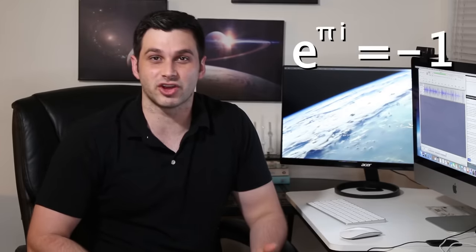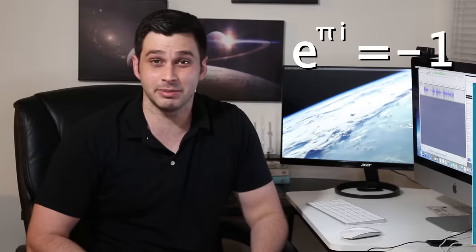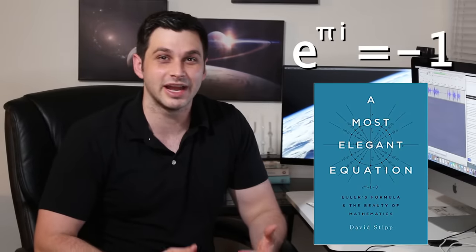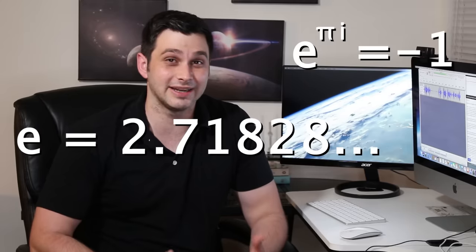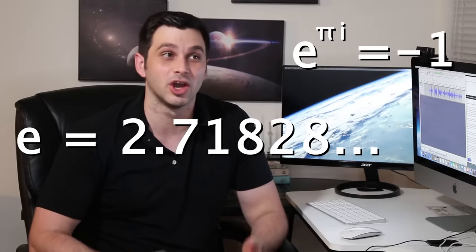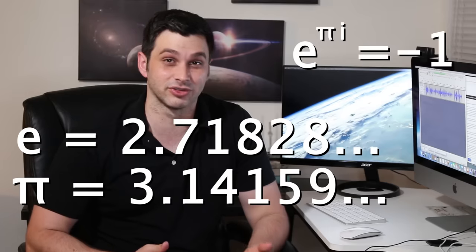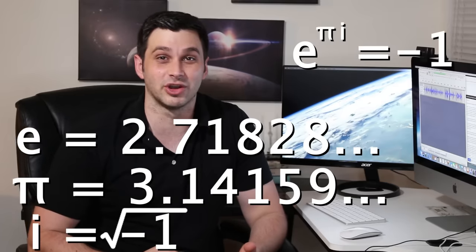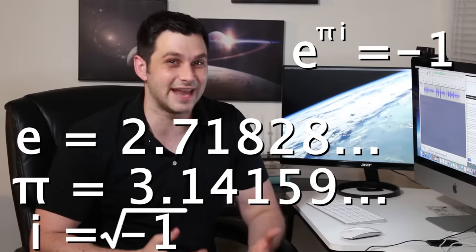Some mathematicians call this the most beautiful equation in all of mathematics, and there have even been books written about it. For those who need a little background: e is an infinitely long non-repeating decimal that has to do with continuous compounding interest, raised to the power of pi, which has to do with circles, times i — the square root of negative 1, known as an imaginary number — equals negative 1.